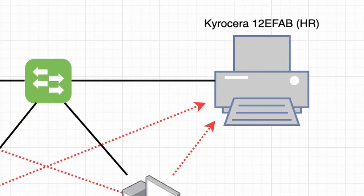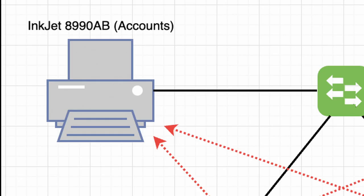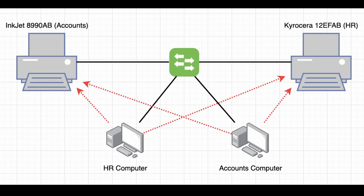VLANs are also used in office environments to separate departments or businesses. For instance, if HR had a printer and accounts had a printer on different floors or buildings, without a VLAN HR could accidentally print to accounts and vice versa - causing confusion. It's also good practice to implement VLANs to keep management devices such as network switches, routers, and wireless access points away from end users, in case a tech-savvy employee tries to fix the Wi-Fi and causes more damage than good.